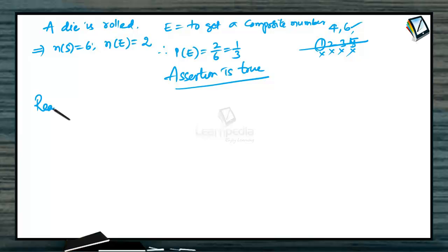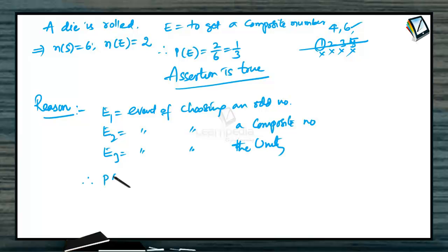What about the reason here? The reason he mentioned for why it is 1/3 is that there are three events: E₁ is the event of choosing a prime number, E₂ is the event of choosing a composite number, and E₃ is the event of choosing unity, that is 1. That is the reason the probability of event E will be 1/3.